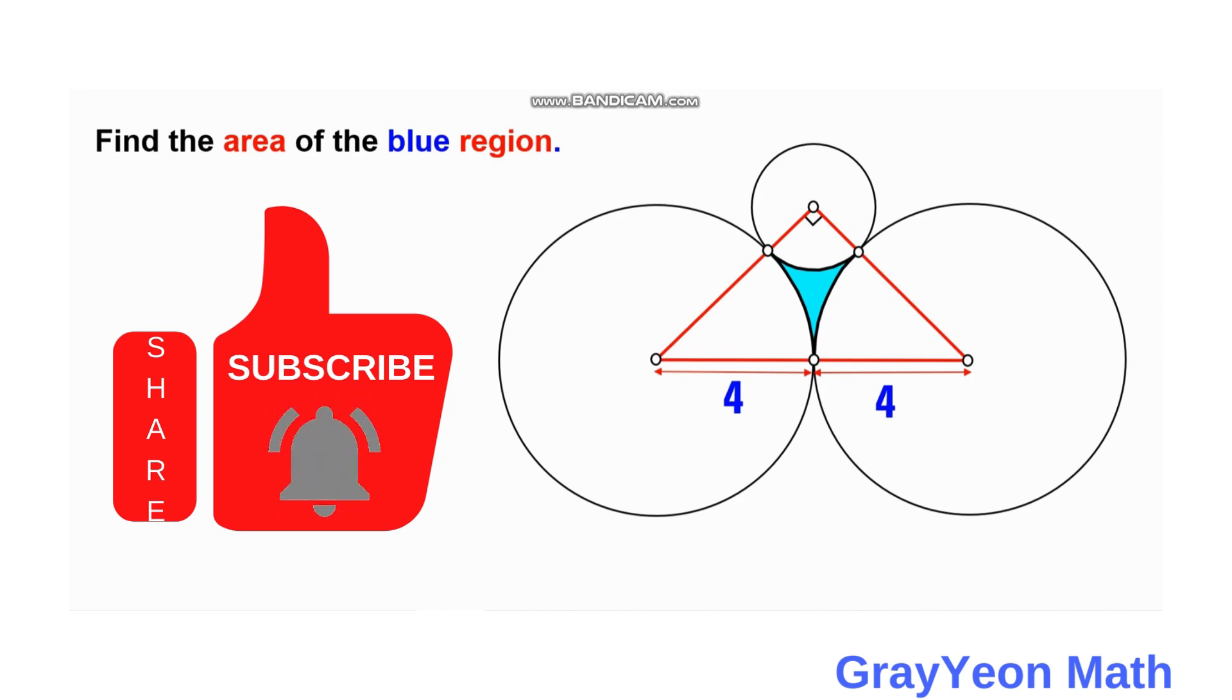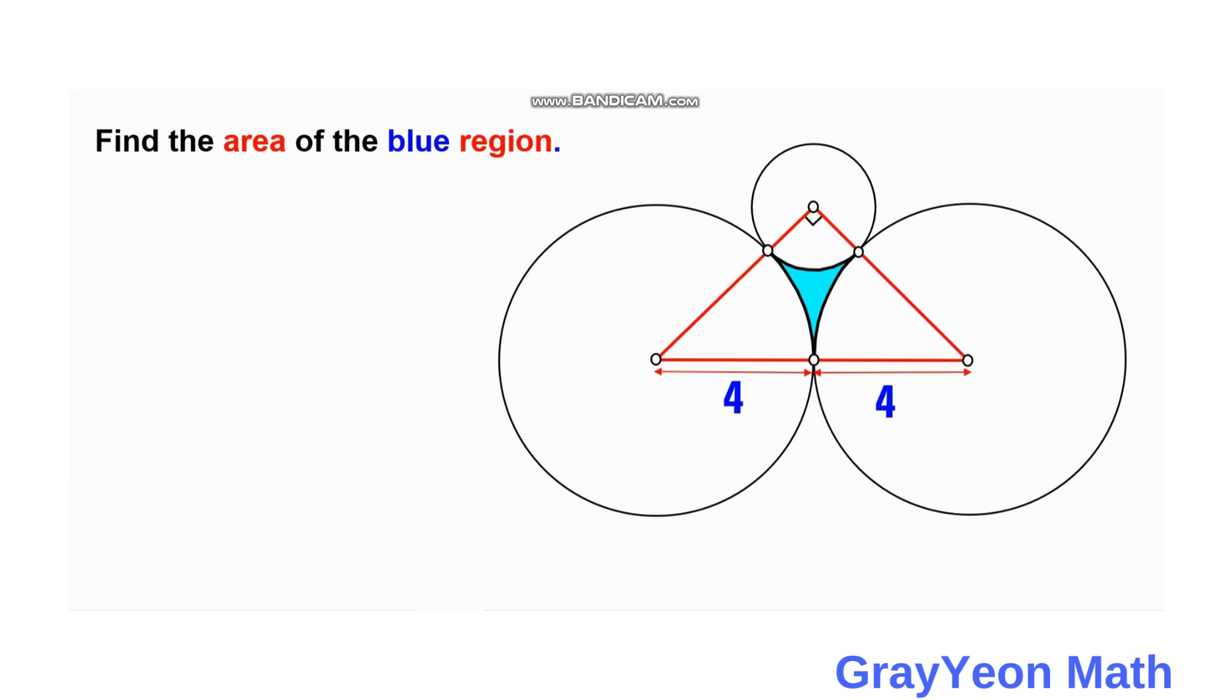This triangle has a hypotenuse of eight units, and the radius of the two larger circles are four units each. They have this blue region in between the three circles, so we are required to find the area of this blue region.